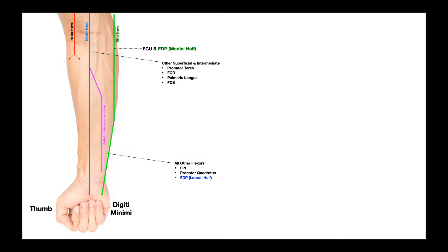This video is going to be an overview of the median and ulnar nerves and all their branches and their functions. The most lateral of all these nerves is the radial nerve. We covered this in great detail in the previous video, so if you'd like more information on the radial nerve, go take a look at that video. You can find the link to it in the description.